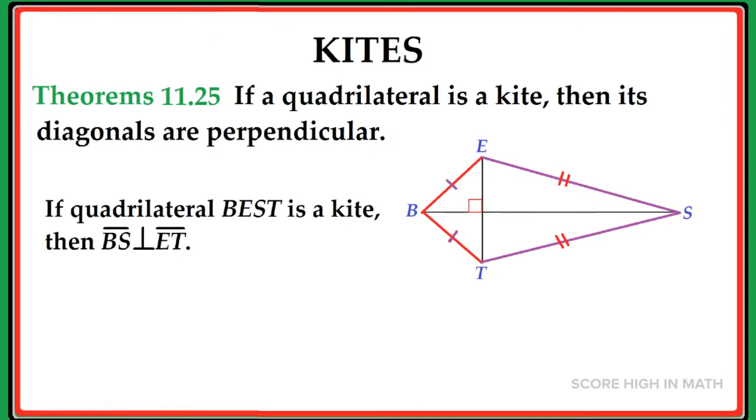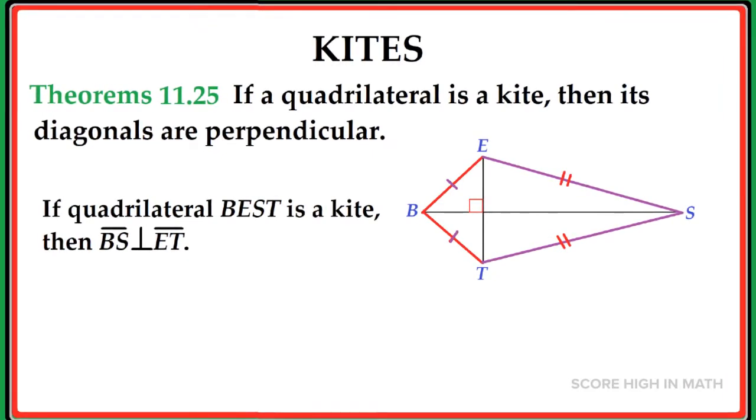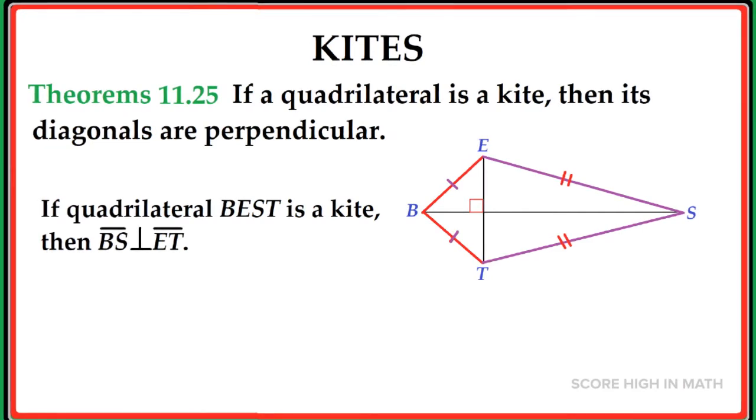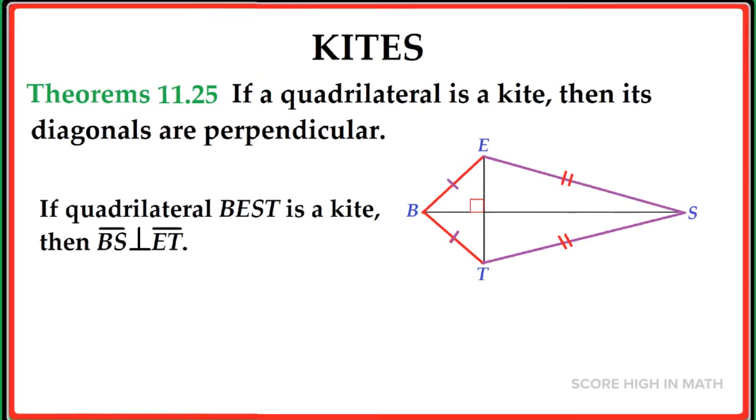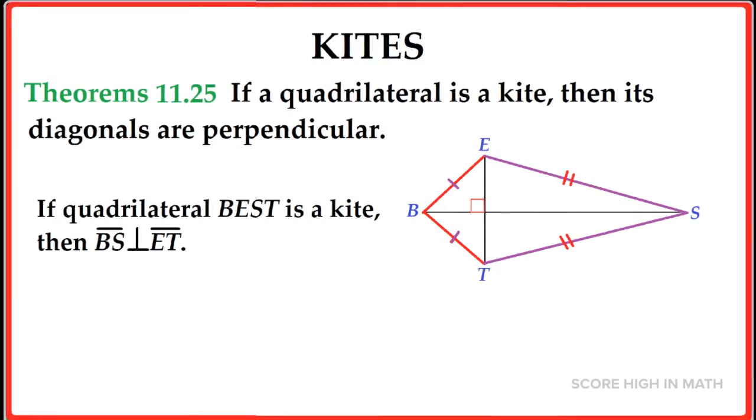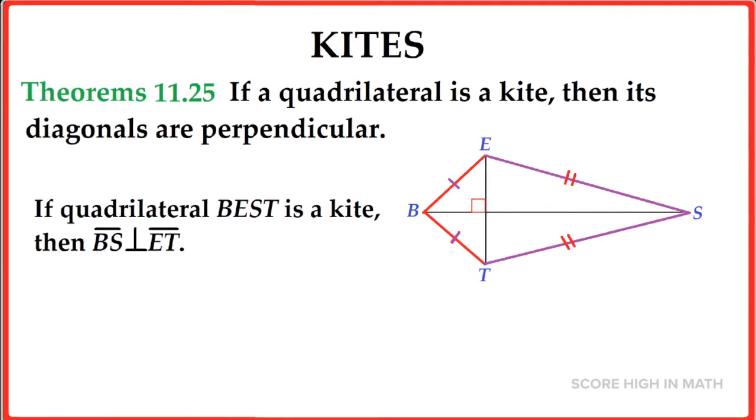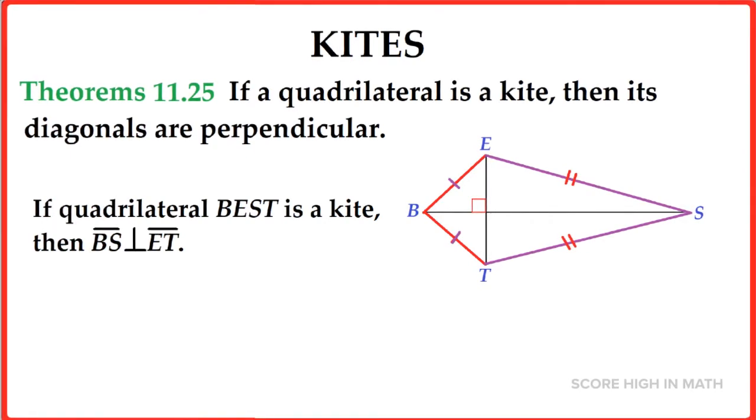In Theorem 11.25, if a quadrilateral is a kite, then its diagonals are perpendicular. I want you to look at the figure. If quadrilateral BEST is a kite, then line segment BS is perpendicular to line segment ET.